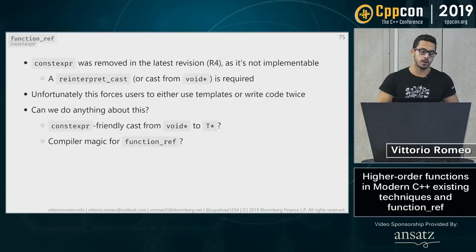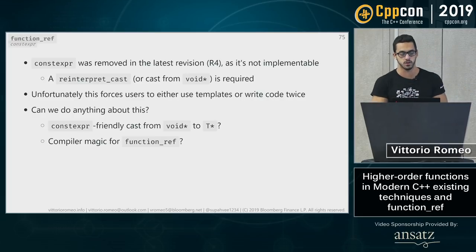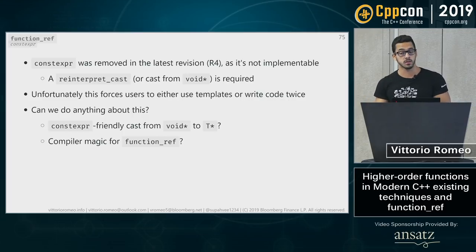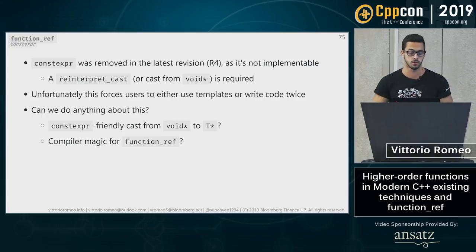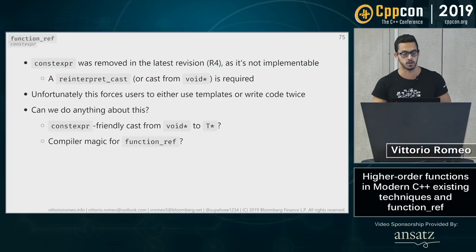Another limitation: constexpr was removed in the latest revision (r4). It's not implementable because the type erasure requires a reinterpret_cast or cast from void*, which isn't allowed in constexpr even in C++20. This forces users to either use templates or duplicate code with both a template and a function_ref version. Perhaps someday these casts will be allowed in constexpr, or function_ref could be made magic like std::allocator, but the committee wasn't happy with that suggestion.